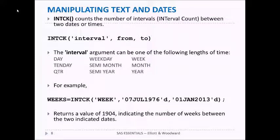Here's an example: WEEKS = INTCK('WEEK', '07JUL1976'd, '01JAN2013'd); returns a value of 1904, indicating the number of weeks between the two indicated dates.